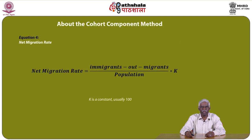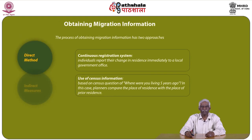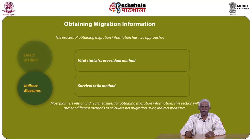The net migration rate equals (in-migrants minus out-migrants) divided by population, multiplied by constant k, usually 100. Obtaining migration information has two approaches: the direct method and indirect measures. The direct method uses a continuous registration system where individuals report their change in residence to a local government office, or uses census information based on questions such as 'Where were you living 5 years ago?' In the case of indirect measures, vital statistics, the residual method, or the survival ratio method are widely used. Most planners rely on indirect measures for obtaining migration information.